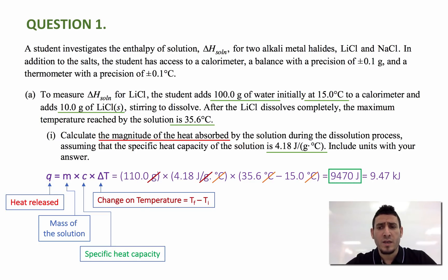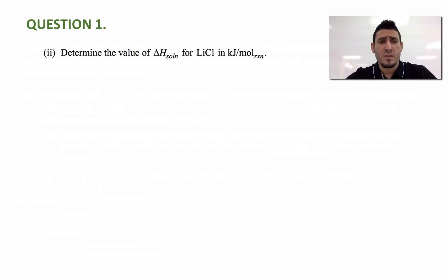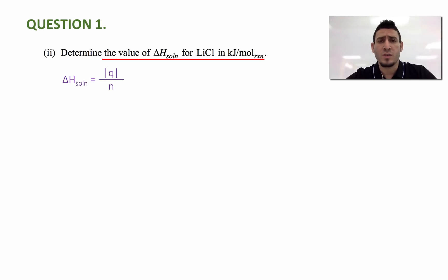Or we can give the answer in kilojoules, so it's 9.47 kilojoules. Now let's move to the next question, which is: determine the value of the delta H solution for lithium chloride in kilojoules per mole reaction. To find delta H solution from the heat released or absorbed, we can say delta H solution is equal to the absolute value of the heat divided by the number of moles.